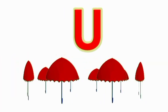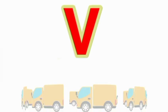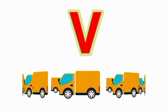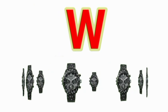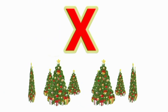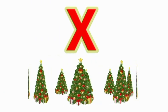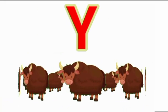U for umbrella, V for van, W for watch, X for atmosphere, Y for yacht.